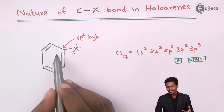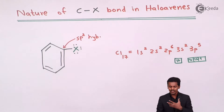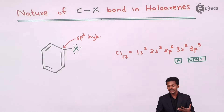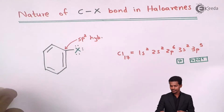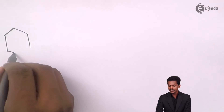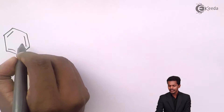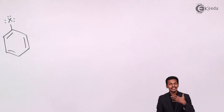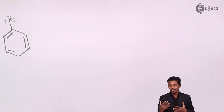The benzene ring present here itself undergoes the resonance process, where shifting of pi electrons takes place. Meanwhile, the lone pairs of electrons on the halogen atom can also participate in the resonance. That is the reason the resonance structures can be given as follows, where the pi electrons get delocalized on the ring itself.